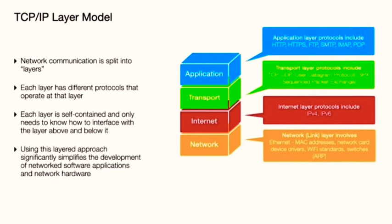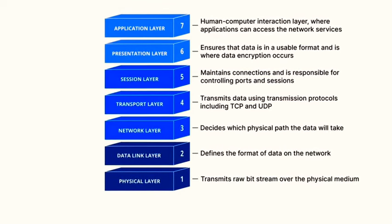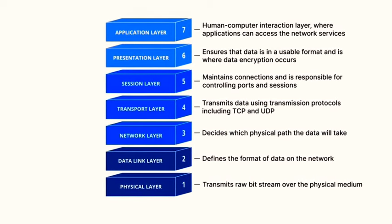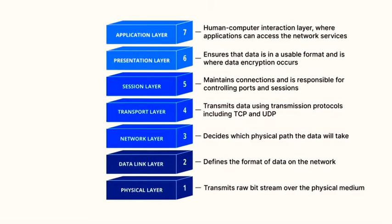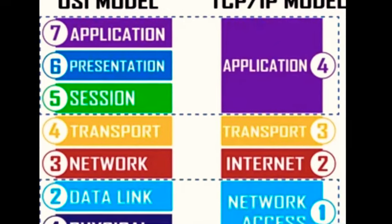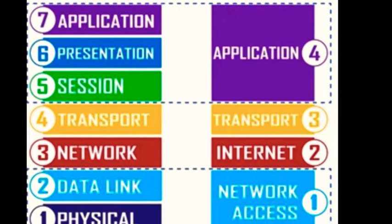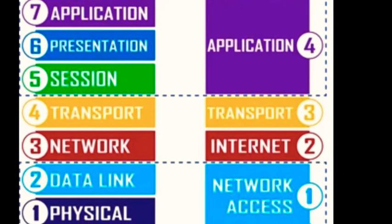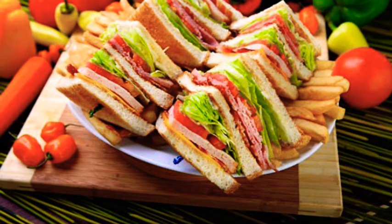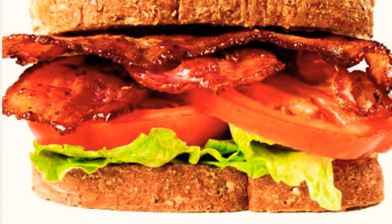Each layer of the TCP/IP model has a unique and essential role. How does this model compare to others, like the OSI model? While the TCP/IP model is widely used, another model called the OSI model also exists. Although the OSI model has seven layers compared to TCP/IP's four, they essentially perform similar functions. Think of it like a sandwich — the OSI model may have more layers, like a club sandwich, while the TCP/IP model is more like a classic BLT, but both sandwiches serve the same purpose: to satisfy your hunger.